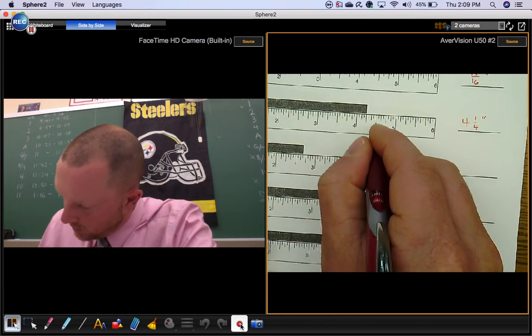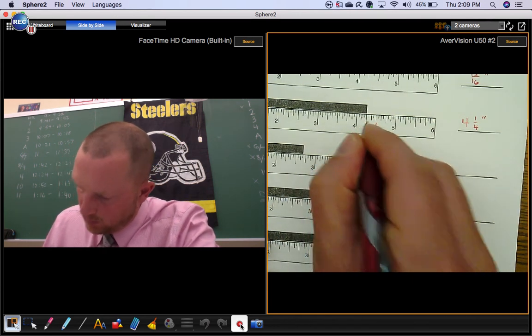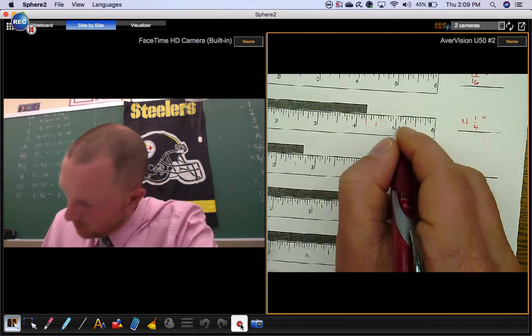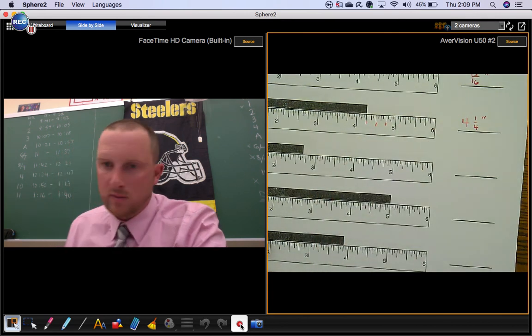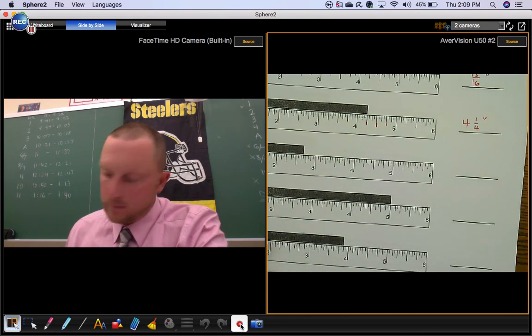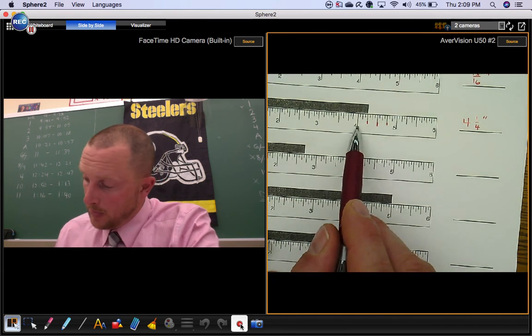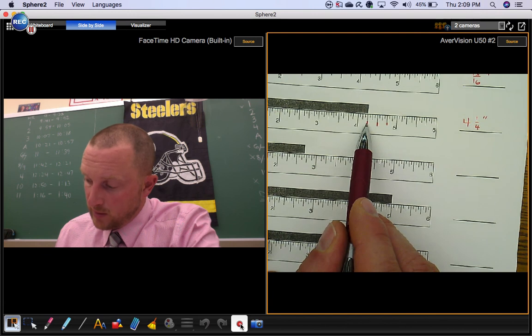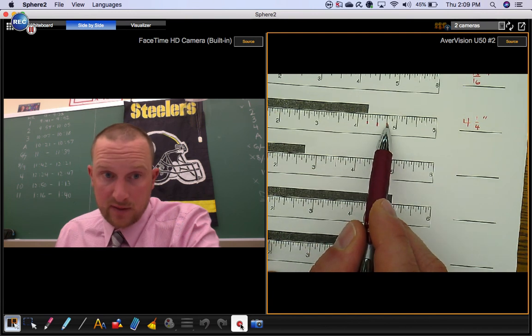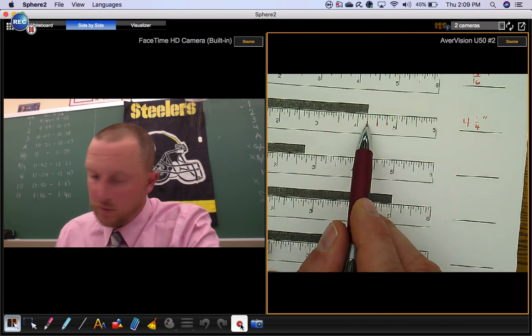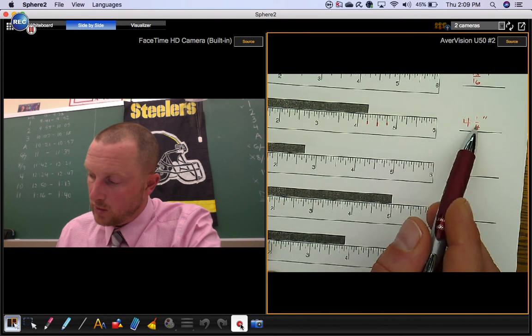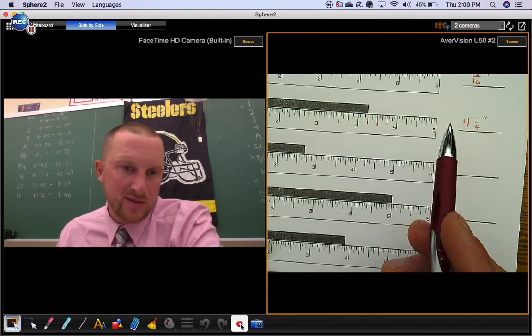So this would be the one half mark. This would be the one fourth mark. This would be the three fourths mark. Okay so if it was like money this would be 25, 50, 75 as a decimal. 0.25 as a decimal is one quarter, like 25 cents in money.